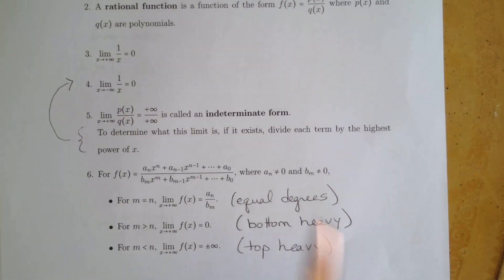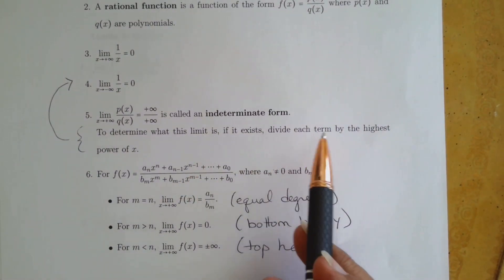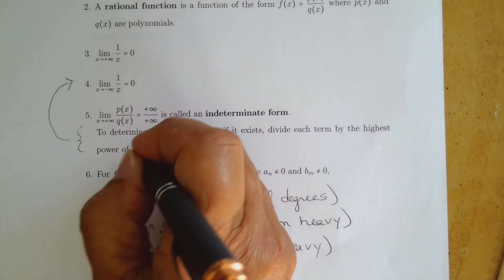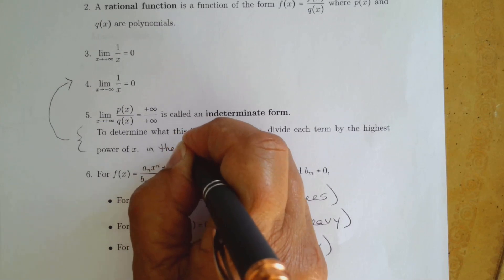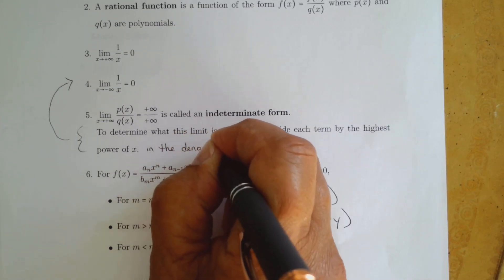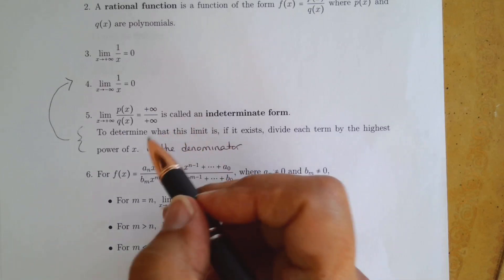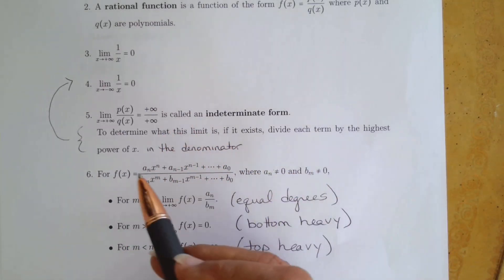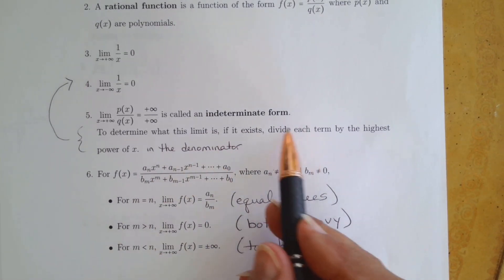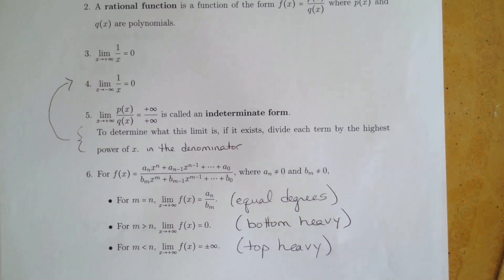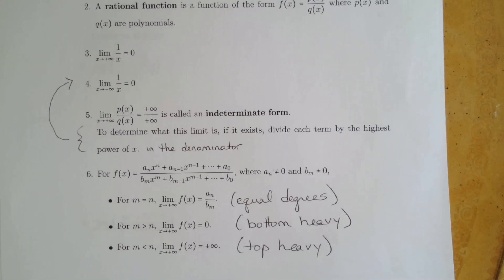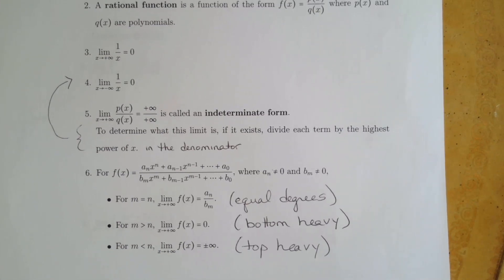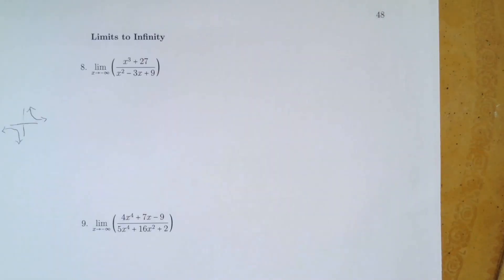When you're determining what the limit is, you're going to divide each term by the highest power of x in the denominator — not just the highest power in the whole problem. You're dividing everything in the problem by that number, but you're looking for what's the highest power of x in the denominator. That's what you're going to divide each term by. Make sure you make a note of that.